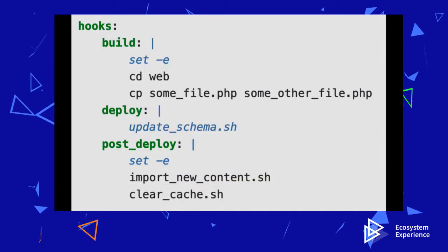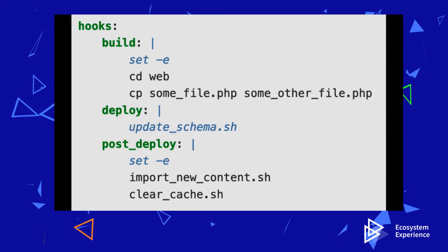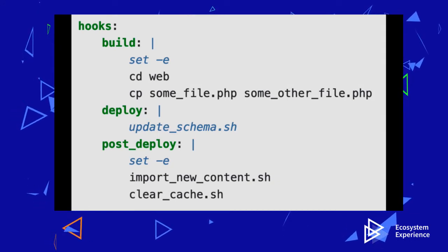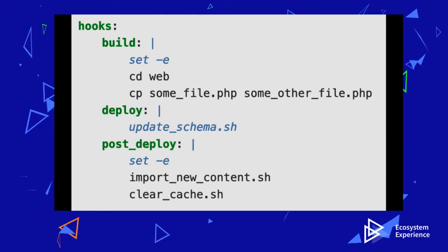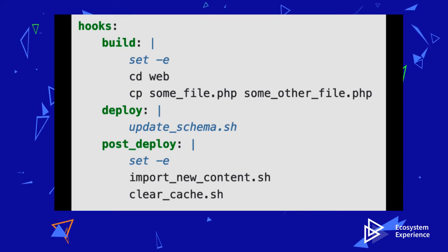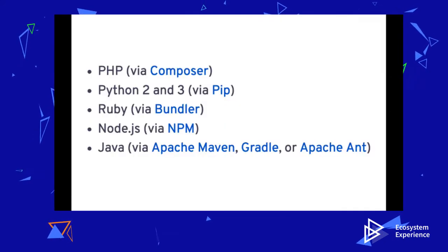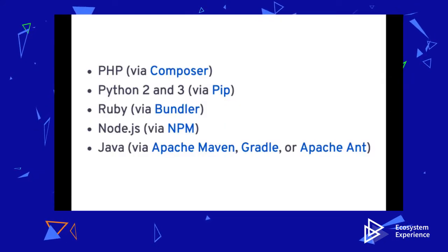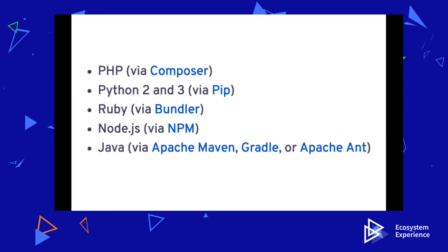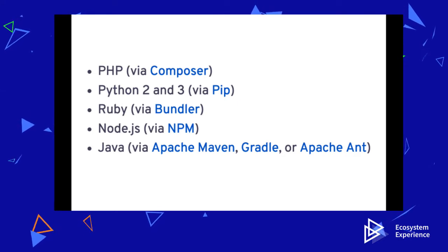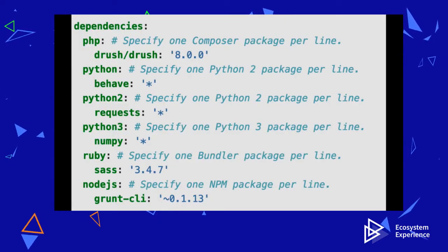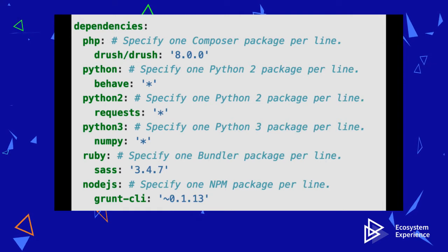The OVH Cloud is also capable of executing code pipelines to build your applications using common tools like Composer, NPM, YARN, Maven, Gradle, PIP, and any other package manager that you use.